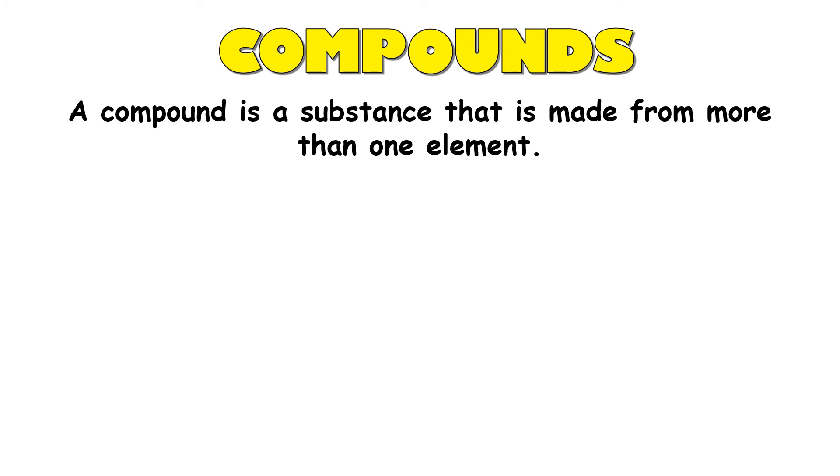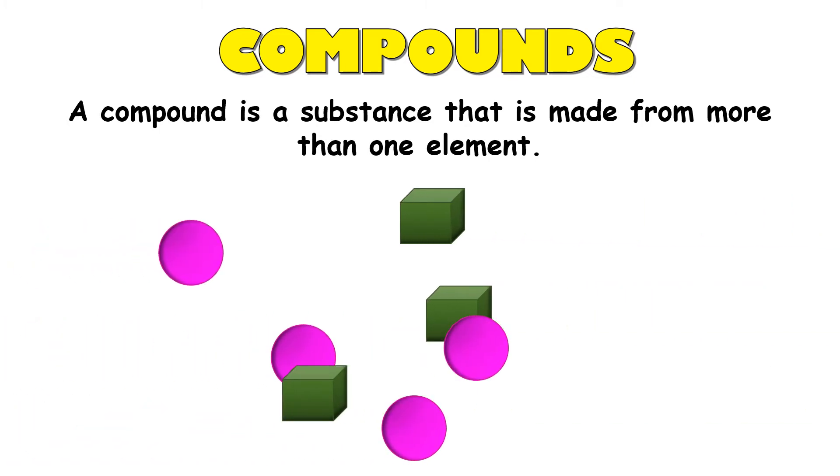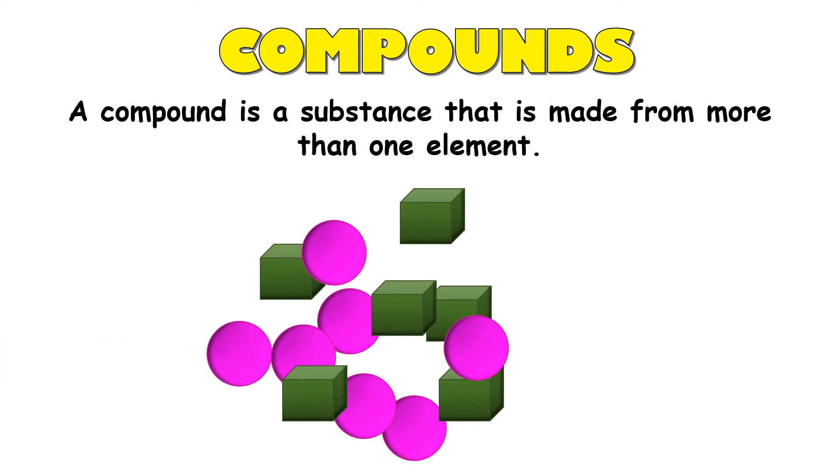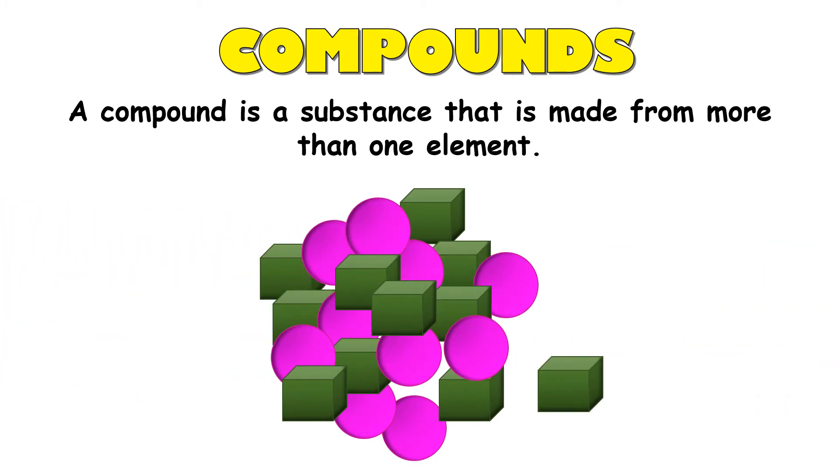Compounds. A compound is a substance that is made from more than one element. In here, the purple element is combined with a green element. When an element is combined with another kind element, they will be called as compound.